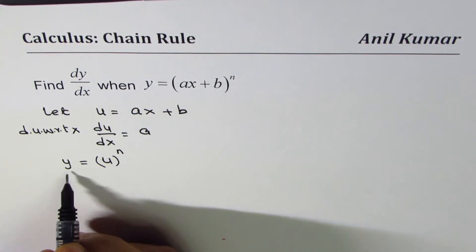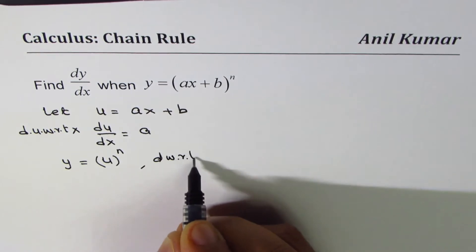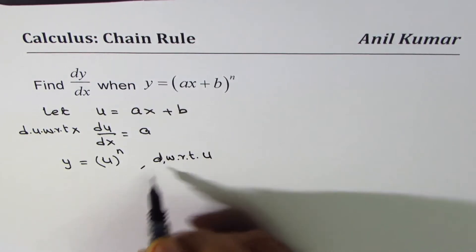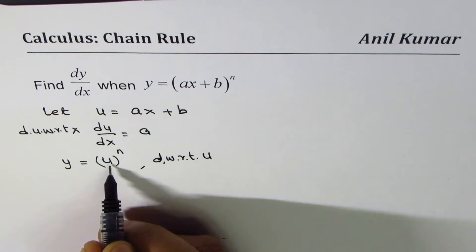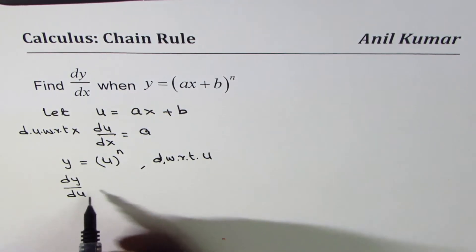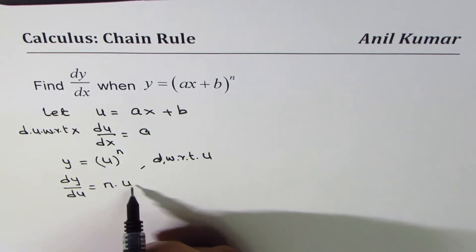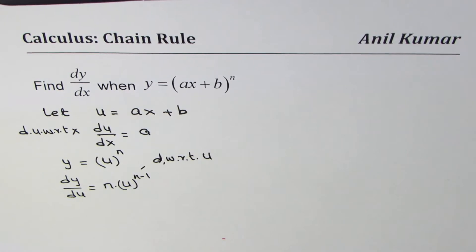Now, we can differentiate with respect to u, since y is a function of u now. So we get dy/du equals to power rule n times u to the power of n minus 1. So we get dy/du in terms of u.